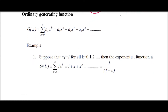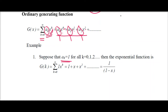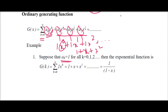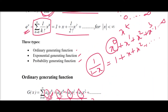The ordinary generating function format is of the form where ak times x power k is the general function. In the generalized series, wherever you have ak it means a0, a1, a2, and wherever you have x power k it is x power 0, 1, 2. This variation of k applies only to the powers, not to the integers. If ak equals 1, then you replace a0, a1, a2 with just 1, giving 1·x power 0 plus 1·x power 1 plus 1·x power 2 and so on, which simplifies to 1 plus x plus x squared and so on — which is the function 1/(1-x).